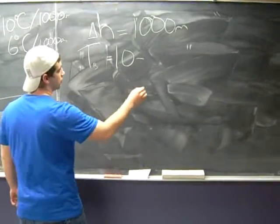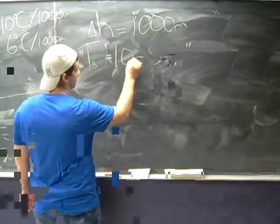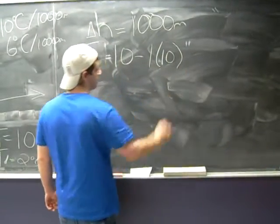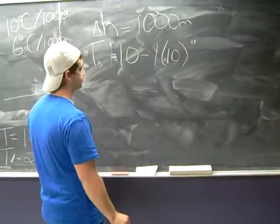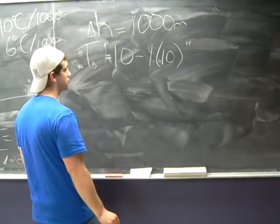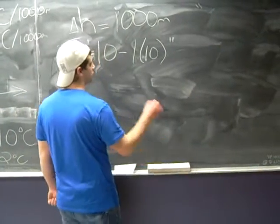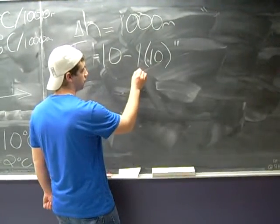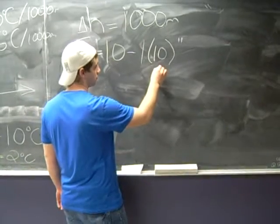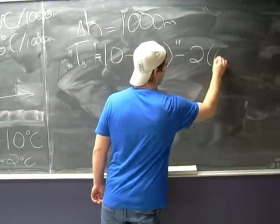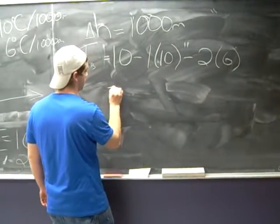Therefore, 10 minus 1 times 10, because the flow travels through 1,000 meters of dry air. Then the airflow travels through 2,000 meters of moist air, which gives us the equation of 10 minus 1 times 10 minus 2 times 6, which can be solved to find the surface temperature of negative 12 degrees.